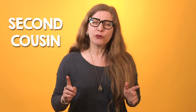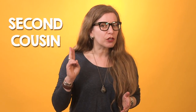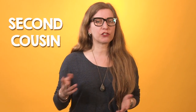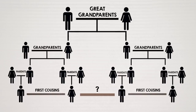For a second cousin, you would have to go back two generations to a great-grandparent to find your shared ancestor. You share a great-grandparent, but not a grandparent. Two generations — second cousins — and so on and so on.